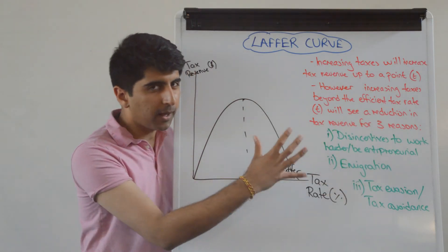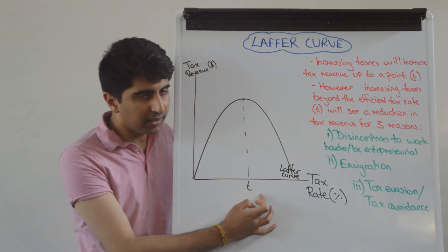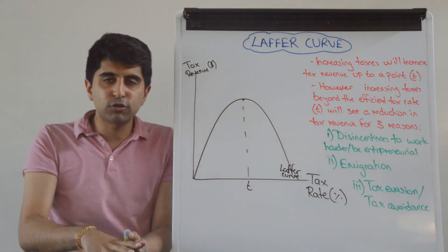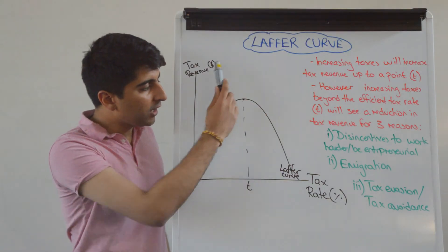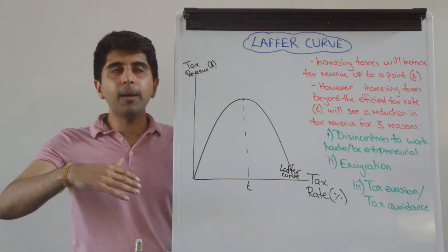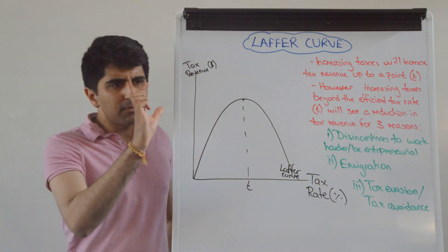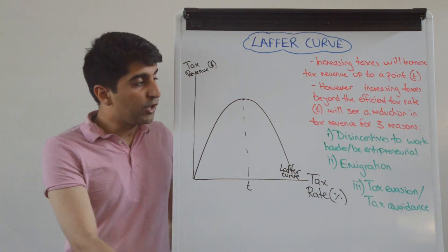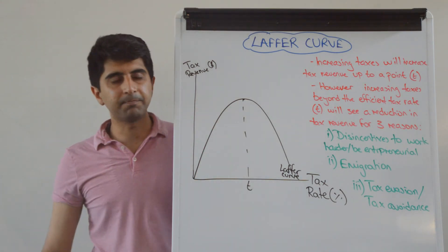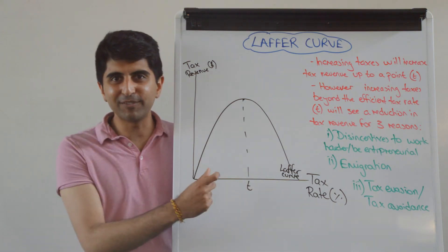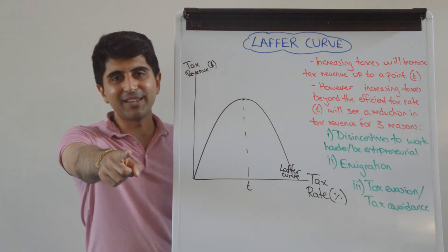So Laffer says that these three arguments come to the fore when the government start to set taxes beyond an efficient tax level. That's when the amount of tax revenue collected by the government may actually start to decrease. So when it comes to you writing your essays, anytime you're talking about governments raising taxes to collect more tax revenue, don't just say that that is guaranteed to happen. Use the Laffer Curve argument to really critique that point, to critique that argument. Hopefully now that makes sense and you're really comfortable with the Laffer Curve argument, very strong evaluation here. Thank you so much for watching guys. I'll see you all in the next video.